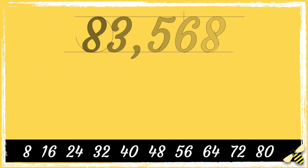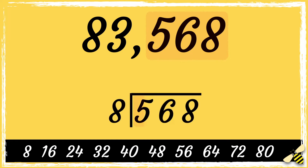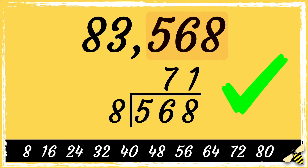Here's another one: 83,568. So let's check the last three digits of this number. From the top of my head I don't know if 568 is divisible by eight, so I'm going to do some short division to help me. Eight goes into 56 seven times, then eight goes into eight once. There are no remainders, so 83,568 is divisible by eight.